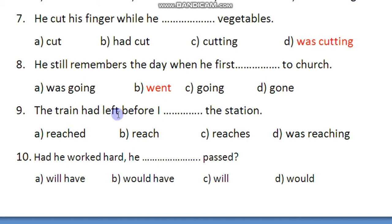The train had left before I dash the station. If one side uses past perfect tense and the other side uses past indefinite, we identify which action happened first. Past perfect is used to show the earlier action. The train had already left — that happened first — before I reached the station.